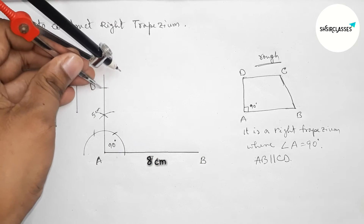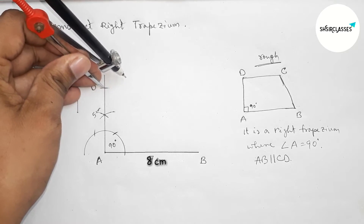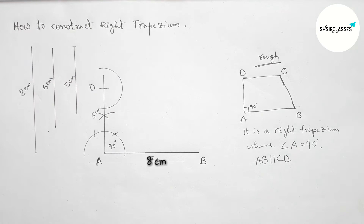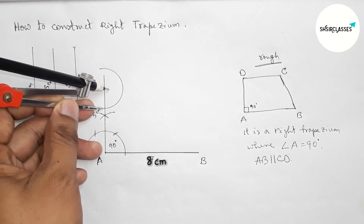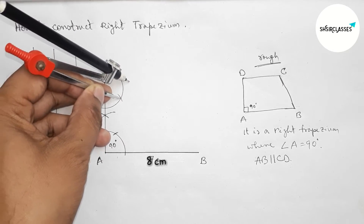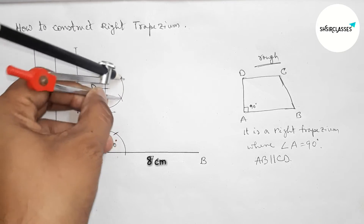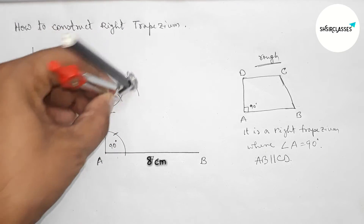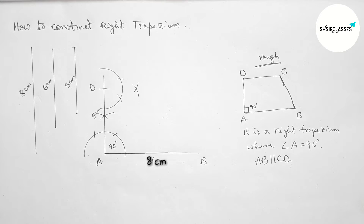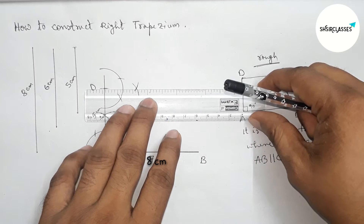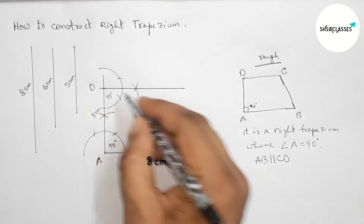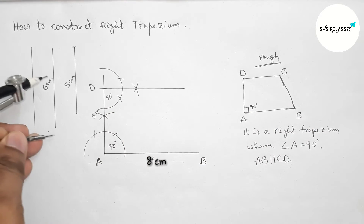Next, we have to draw a 90-degree angle at point D to draw a line parallel to AB. Drawing a 90-degree angle at D in the same way — if you don't know how to construct a 90-degree angle, you can watch my other video. Joining the line, which is parallel with AB, giving us another 90-degree angle.